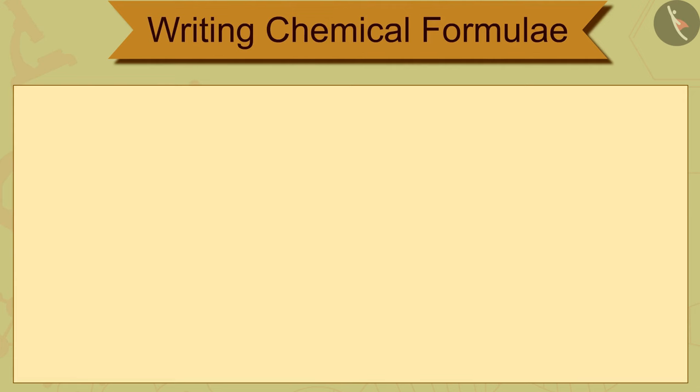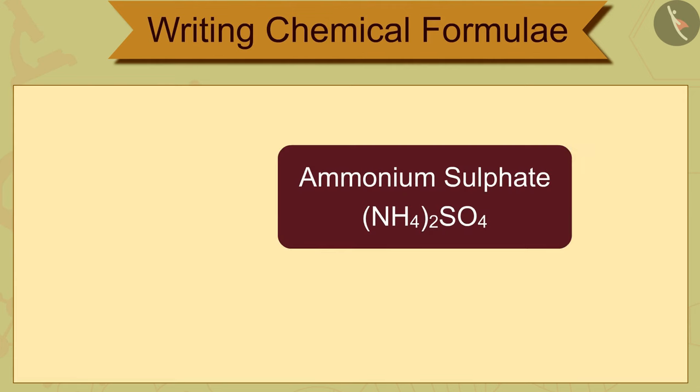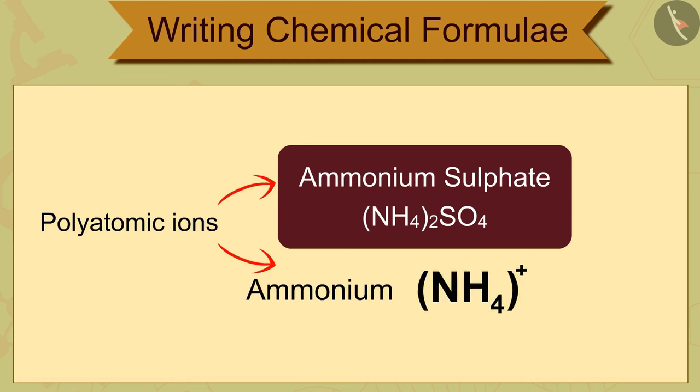For example, the formula for ammonium sulfate is (NH4)2SO4. Here the number of polyatomic ions ammonium NH4+ is 2, so we write it in a bracket.